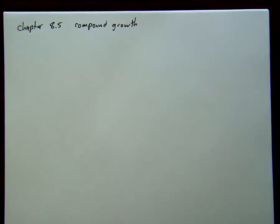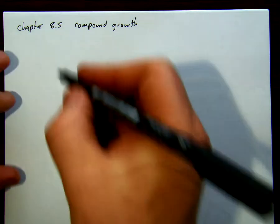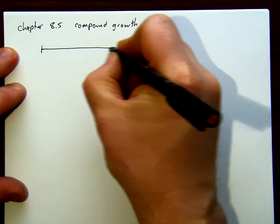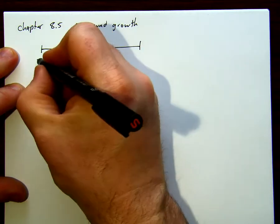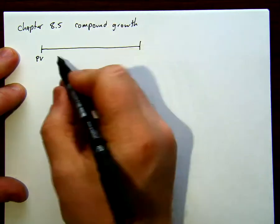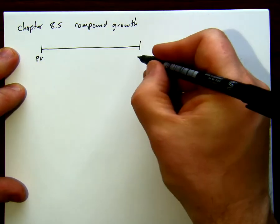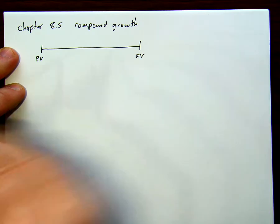We're going to look at how much something is going to grow over a certain time when we have compounded interest going on. Just like every other compound interest problem, every other simple interest problem, we're taking a look at a present value here, and it's going to have continuous growth to a future value.